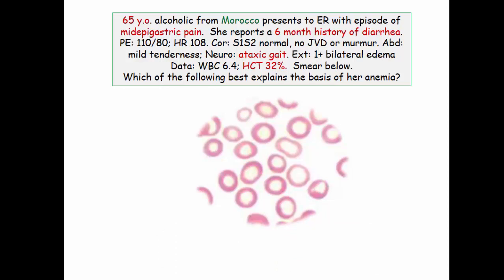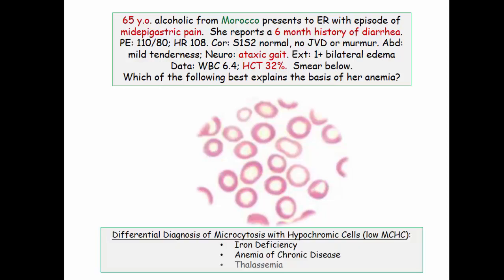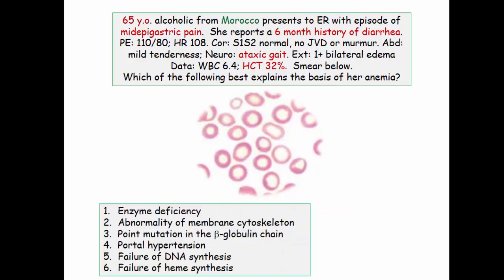The differential diagnosis didn't change — it's the same microcytic differential as before, but thalassemia is out because there are no target cells. We either have low iron levels as in iron deficiency, or the iron is trapped inside cells as occurs in anemia of chronic disease. We need something that causes hypochromia and thereby microcytosis.